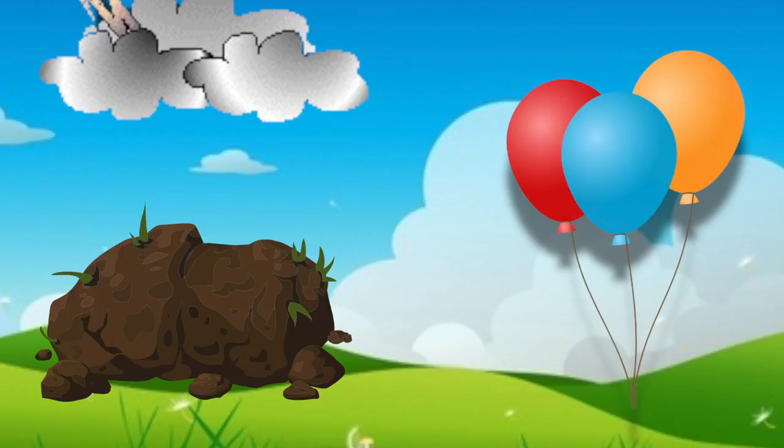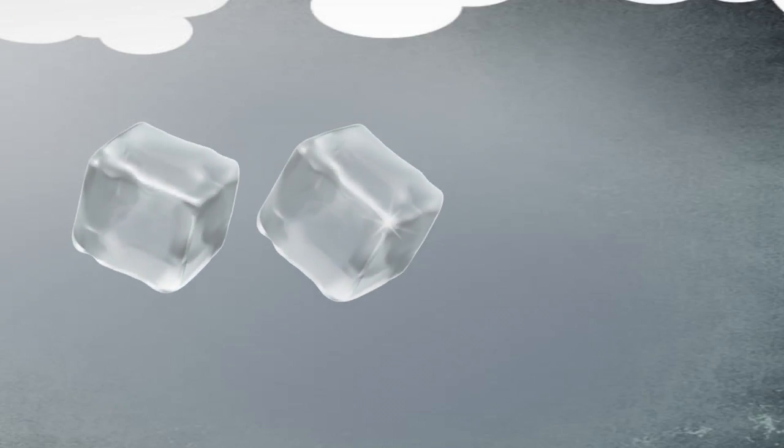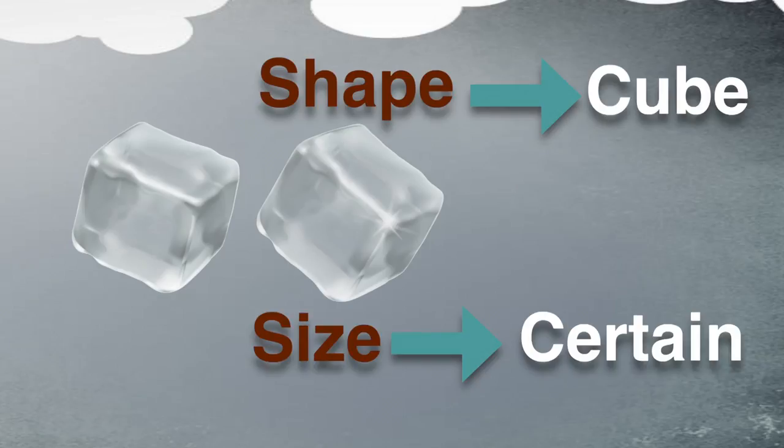Matter in solid state has a definite shape and size. It won't adjust. Take ice for example. Definite shape is cube, size is also certain. Unless it melts, it won't adjust itself.